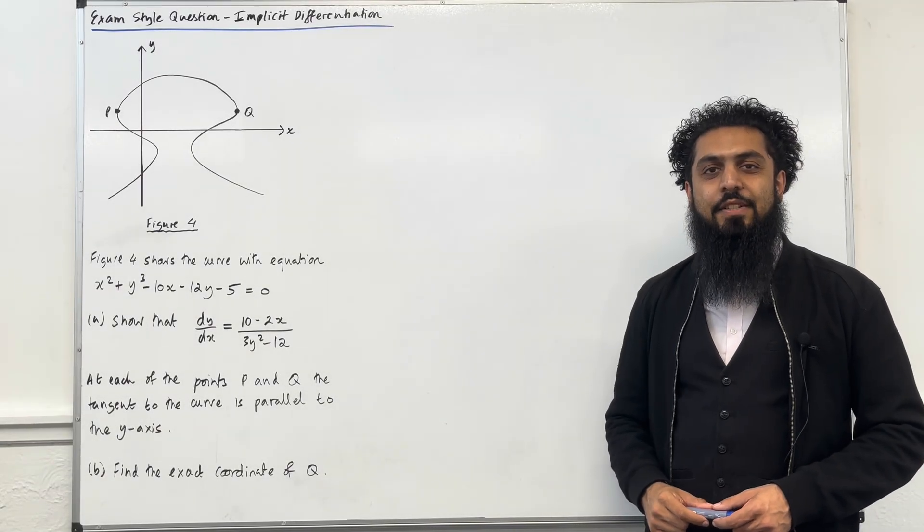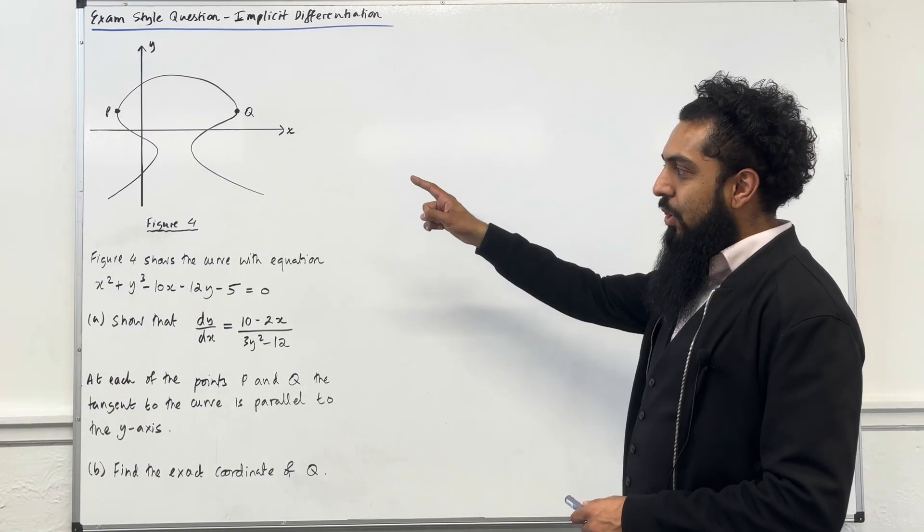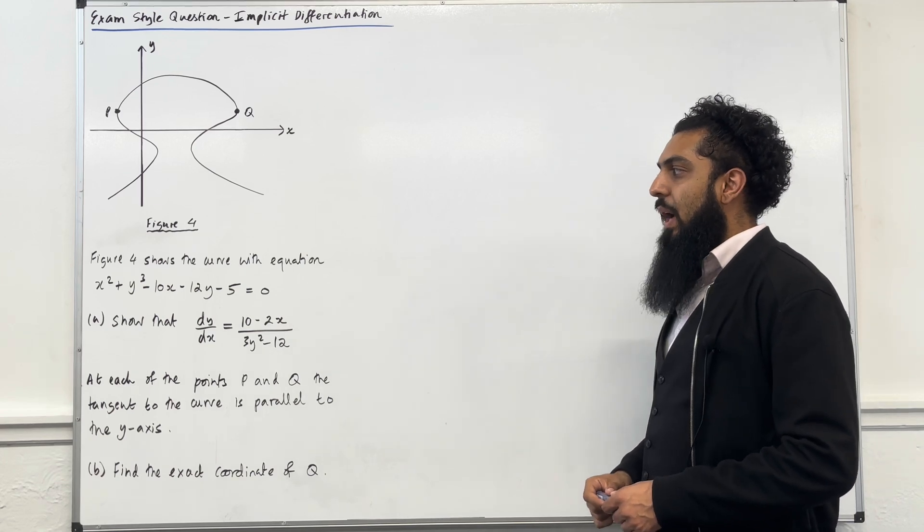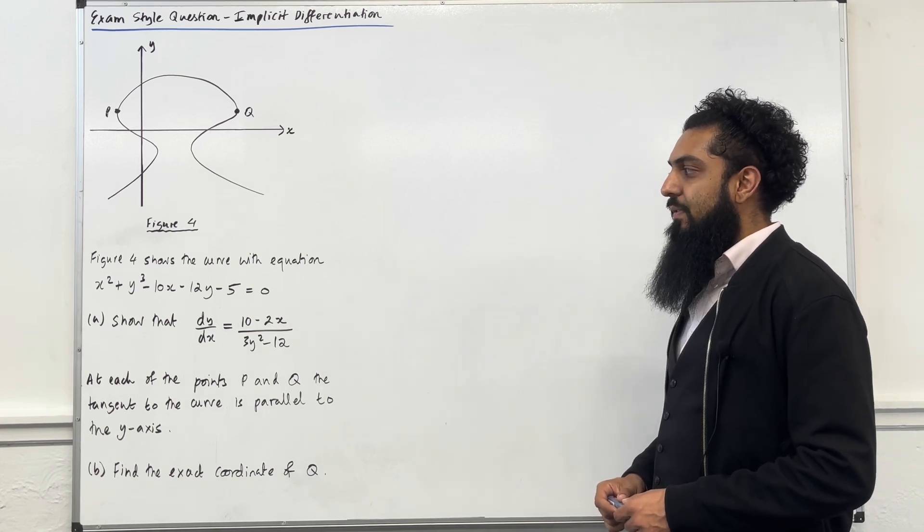Here is an exam study question on implicit differentiation. Figure 4 shows the curve with the equation x squared plus y cubed minus 10x minus 12y minus 5 equal to 0.